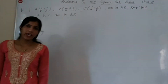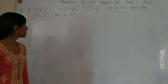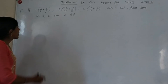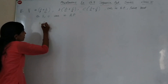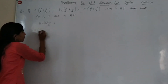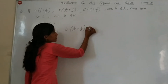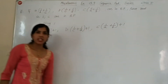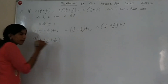Hello students. Today we are going to discuss Miscellaneous Exercise, Chapter 9, Sequence and Series, Class 11, Question 16. If 1/b, 1/c, 1/a are in AP, prove that a, b, c are in AP. Add 1 to all three terms — add 1 to each of them.